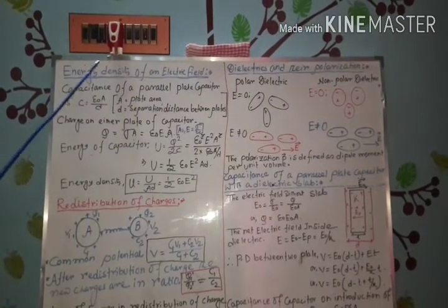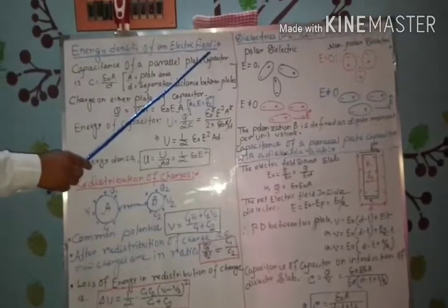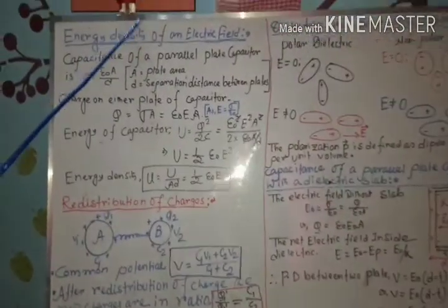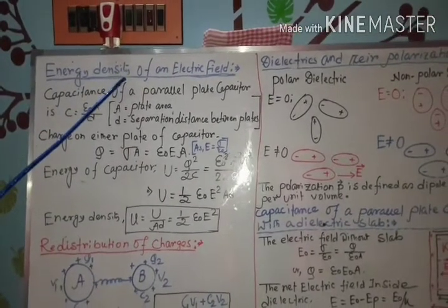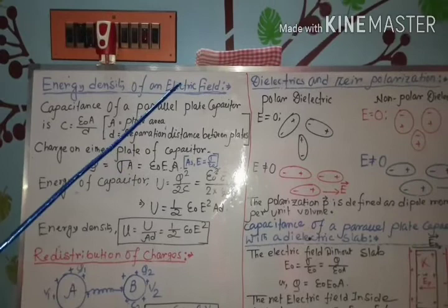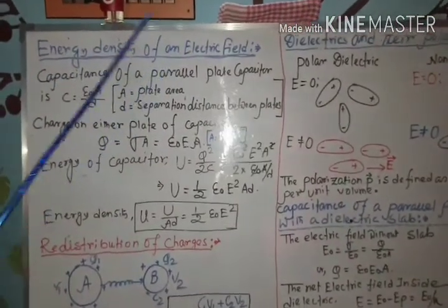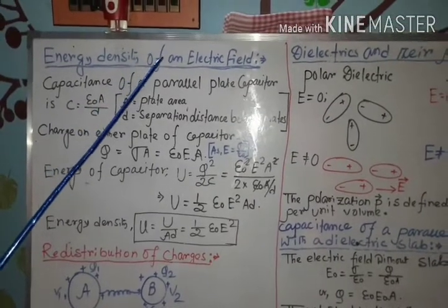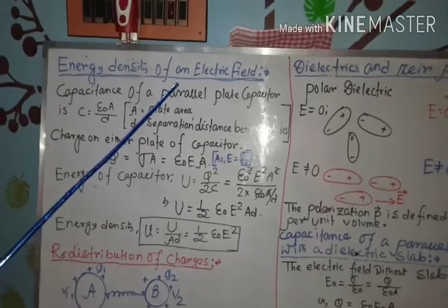What is energy density of an electric field? Energy density means the energy stored in an electric field per unit volume. So, energy stored per unit volume in an electric field is known as the energy density.